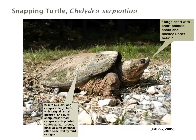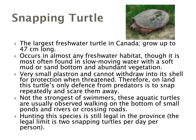It has a long tail, a very small plastron, a broad carapace with pointed scutes at the rear, and brown, black, or olive carapace coloration. It has a relatively large head with a short pointed snout and hooked upper beak. This species can be found in almost any freshwater habitat. Because it has such a small plastron, it can't withdraw into its shell, so its only defense is to snap repeatedly. It's not a very strong swimmer, so they're usually observed walking along the bottom of ponds or rivers, or crossing roads.